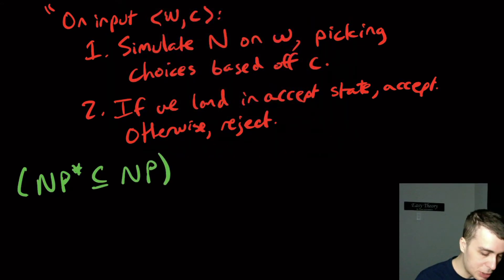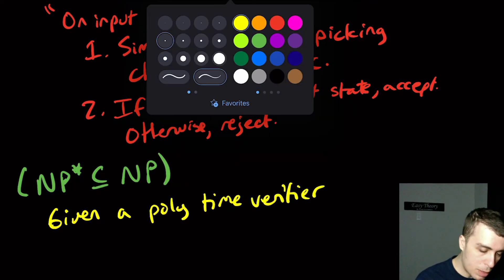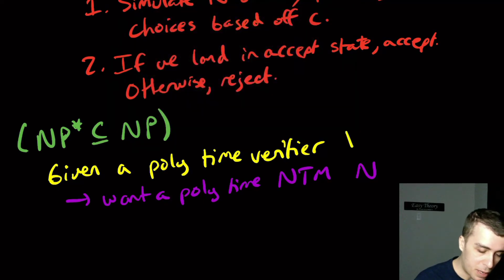So the translation here is that we're given a polytime verifier. And what do we want out of this thing? Well, we want to actually get the non-deterministic Turing machine. So we want a polytime non-deterministic machine. Let's call it M and actually let's call the verifier, let's say V for verifier.